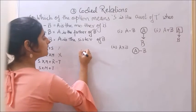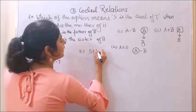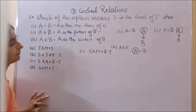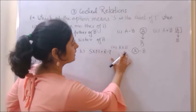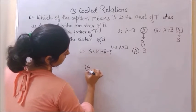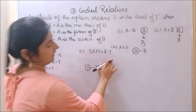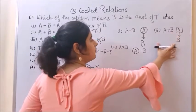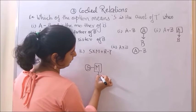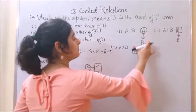Option C is S into M plus R minus T. S into M is S is the sister of M. M plus R is M is the father of R, lower generation. Next is R minus T means R is the mother of T.